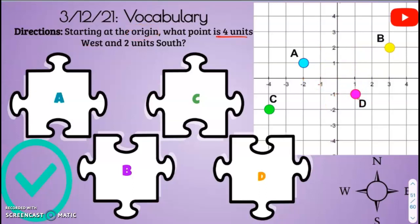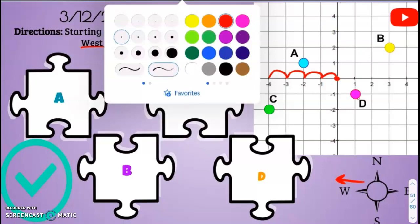Four units west. So we're going to start at the origin. West, if we take a look at our compass down here, west is right over here. So west is going to go to the left. How many? Four units to the left. So one, two, three, four units to the left, and then we're going to go...